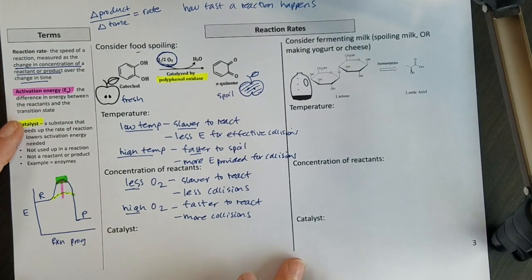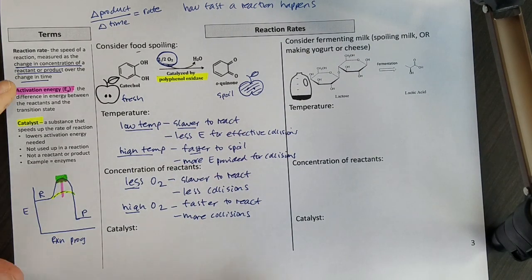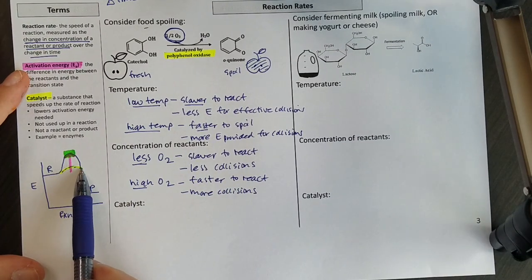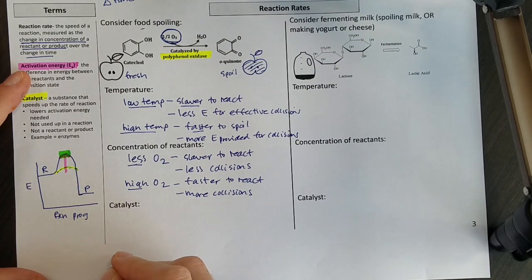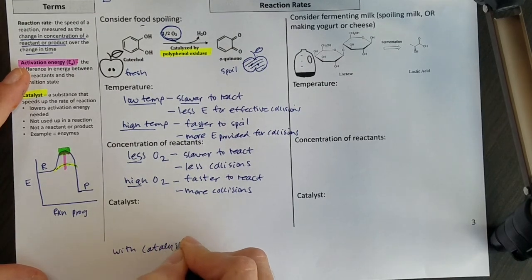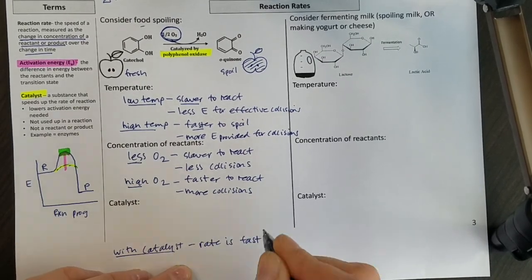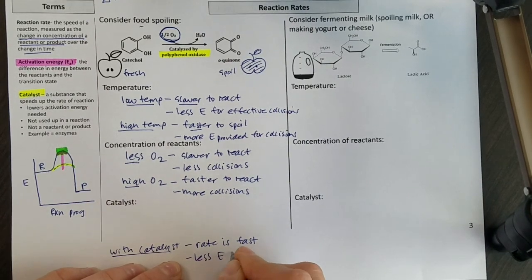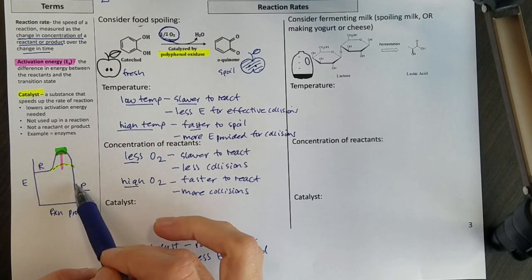Lastly we're going to look at catalysts and how they affect our reaction rates. Thinking about catalysts, remember we have our energy diagram over here, and a catalyst makes a reaction go faster. So with a catalyst, my rate is going to be fast, because I have that helper to make that reaction happen. I have less energy required, so it's easier to go from reactants to products.